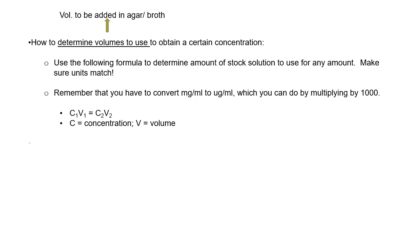Most antibiotics are heat labile, so keep that in mind. For broth, cool it down first and then add your filter-sterilized antibiotic. To find the volume to add, use the formula C1V1 = C2V2, where C stands for concentration and V stands for volume. Make sure your units match — convert mg to µg by multiplying by 1000.